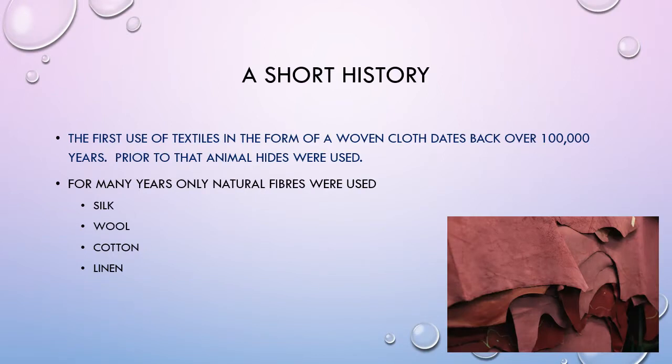So, a short history of textiles to start us off. The first use of textiles in the form of a woven type cloth dates back to over a hundred thousand years. Prior to that, animal hides were used, and for many years there were only natural fibres — these natural fibres were silk, wool, cotton and linen.